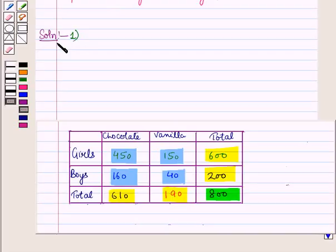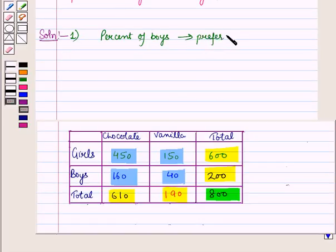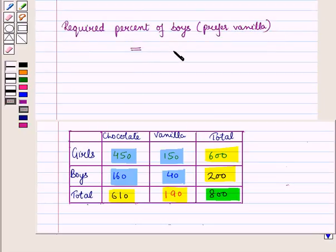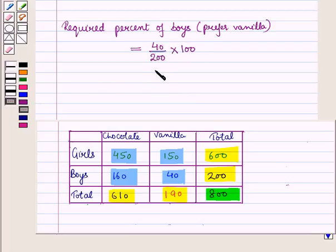In the first part we have to find the percent of boys who prefer vanilla flavor. For this we find the proportion of boys who prefer vanilla given the condition of 200 boys, then multiply by 100. So the required percent is the number of boys who like vanilla flavor, that is 40, upon the total number of boys, that is 200, into 100. This is equal to 20 percent.